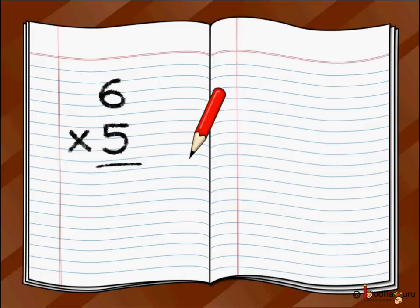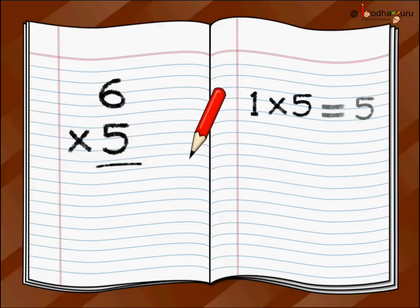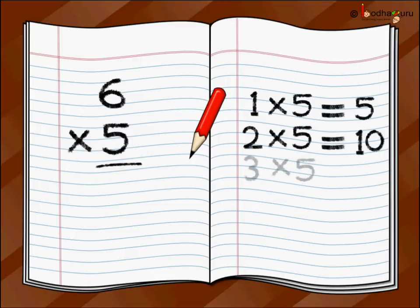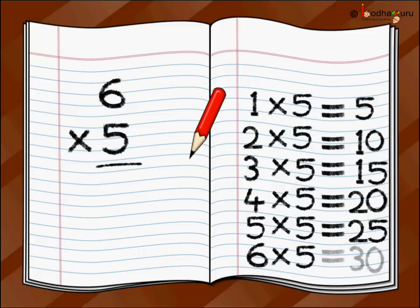Now, how do we do this multiplication? There are 5 hands in each group, so we would use the multiplication table of 5 and go till 6 times 5. Let us do it: 1 five is 5, 2 fives are 10, 3 fives are 15, 4 fives are 20, 5 fives are 25, and 6 fives are 30. Yes, 6 fives are 30. 6 times 5 means 30.